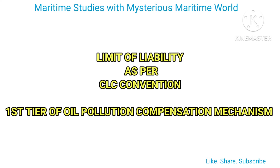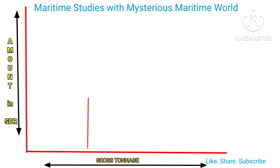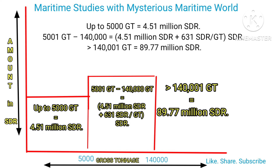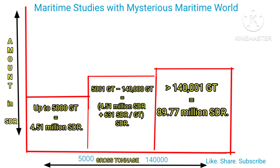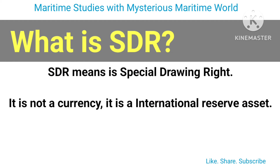The limit of liability is per the CLC Convention. In case of an oil spill incident, the ship owner can limit his liability. On the x-axis is gross tonnage and on the y-axis is the amount to be paid in SDR. A ship owner of an oil tanker up to 5,000 GT can limit his liability up to 4.51 million SDR plus 631 SDR per GT. A ship owner of an oil tanker of more than 140,001 GT and above can limit his liability up to 89.77 million SDR.